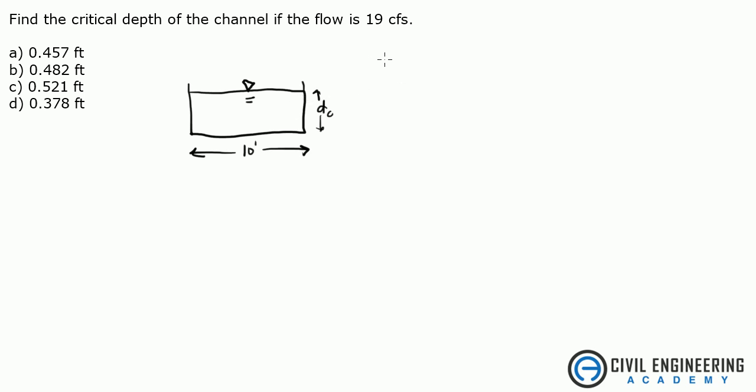So what do we know? We know Q is 19 CFS. I'm using the Civil Engineering Reference Manual, and if you look up equation 19.75 in the version that I'm using, you'll find that the critical depth cubed equals your flow rate squared over gravity times your width squared.